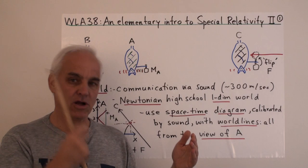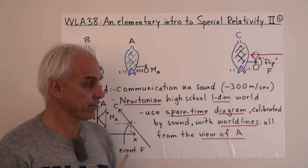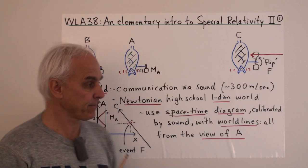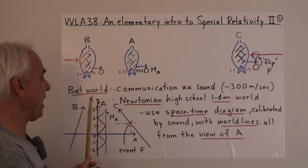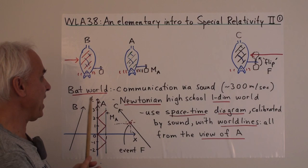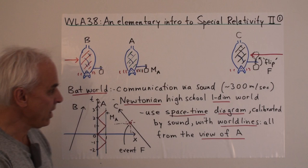Bat A is holding this mirror out at arm's length and using the mirror to bounce sound waves back and forth — it's a sound mirror more than a light mirror. As we've seen last time, this gives a notion of a clock for Bat A: he can time the ticks coming back from the mirror, giving him an internal clock to measure his world. We'll assume the same kind of situation is available to Bat B — she also has a mirror and can play the same game to establish her clock. And perhaps Bat C can be doing the same thing.